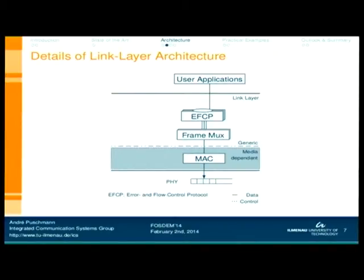Of course you need the frame multiplexer and demultiplexer. In the basic architecture, you have a media-dependent part which is basically the medium access control — either CSMA-based like IEEE 802.11, or TDMA-based — accessing the physical layer, basically your USRP or whatever radio you want to use.